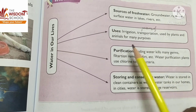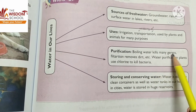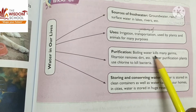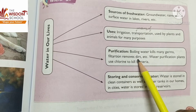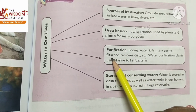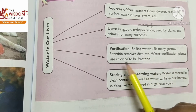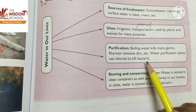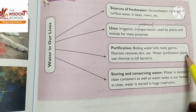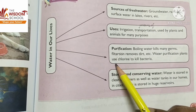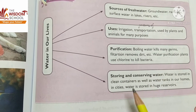We have read in this chapter that water is also used by plants and animals for many purposes. Purification — purification kya hota hai: boiling water kills many germs. Water ko boil karte hai. Filtration removes dirt. Filtration se dirt remove hoti hai. Water purification plants use chlorine to kill bacteria — jo water purification ki factories ya plants hote hai wo chlorine ka use karte hai to kill bacteria.